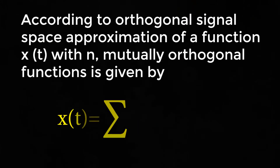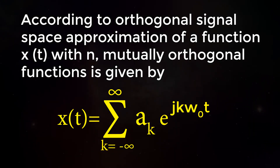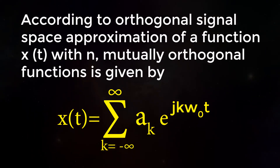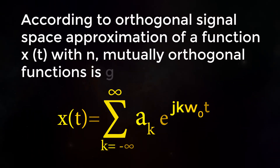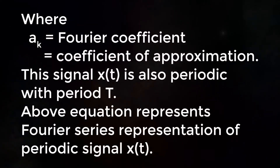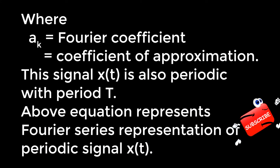According to orthogonal signal space, the approximation of a function X(T) with mutually orthogonal functions is given by X(T) = Σ (k = −∞ to ∞) of a_k · e^(jkω₀T), where a_k is the Fourier coefficient, also called the coefficient of approximation. This signal X(T) is also periodic with period T. The above equation represents the Fourier series representation of periodic signal X(T).